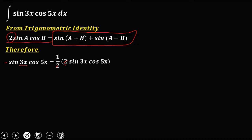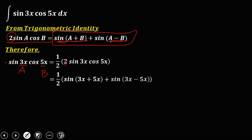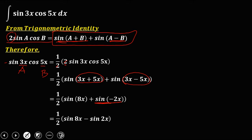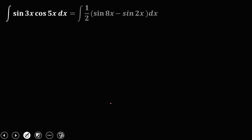From the identity, a is 3x and b is 5x. So we have 1 half times sine of a plus b, which is sine of 3x plus 5x, plus sine of a minus b, which is sine of 3x minus 5x. Simplifying, 3x plus 5x is 8x and 3x minus 5x is negative 2x, giving 1 half times (sine 8x + sine(−2x)). Since sine(−2x) = −sine(2x), this becomes 1 half times (sine 8x minus sine 2x).